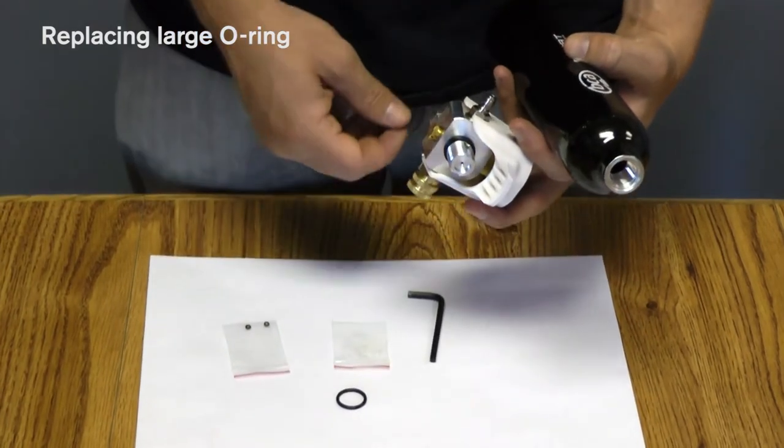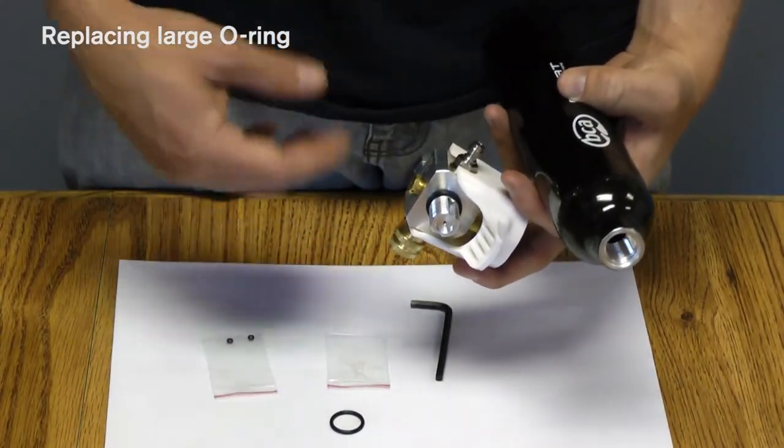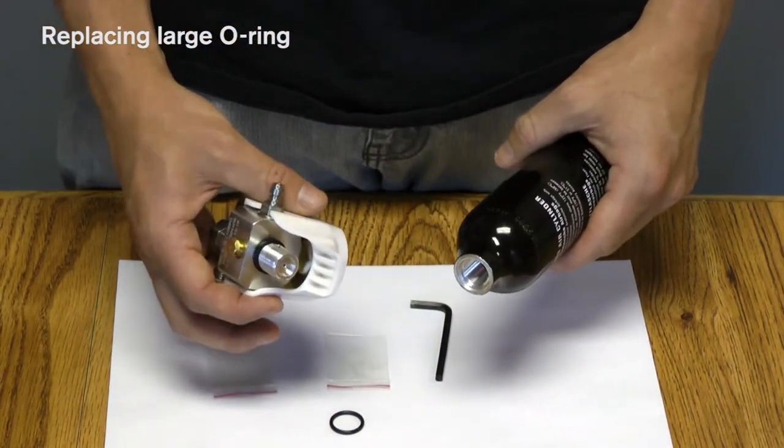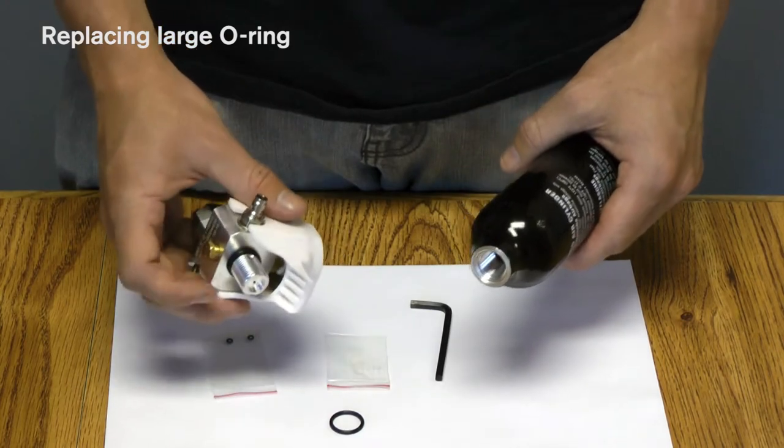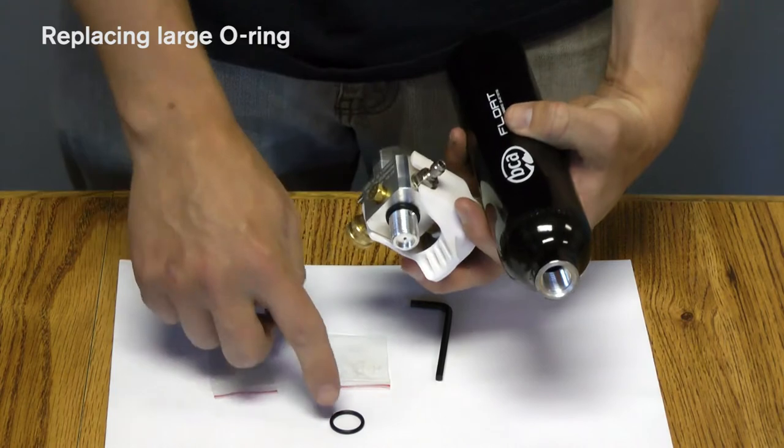This O-ring can dry out, it can crack. Sometimes it'll just be compressed for so long with all that high pressure that at some point it's a good idea to get it replaced so that you can make sure the seal is not compromised. So that's this O-ring right here.